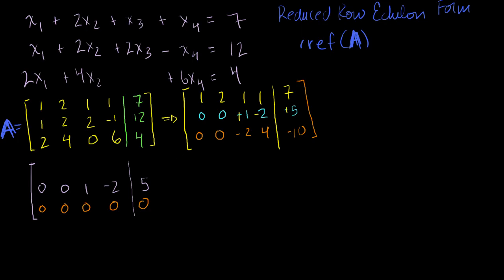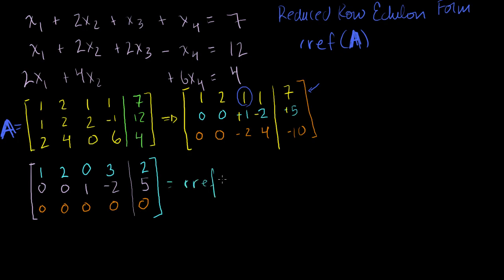Now I want to make the entry above the leading 1 in the second row's column also 0. I replace the first row with the first row minus the second row: 1−0=1, 2−0=2, 1−1=0, 1−(−2)=3, and 7−5=2. And there we have it — we have our matrix in reduced row echelon form of matrix A.